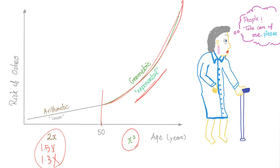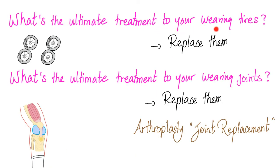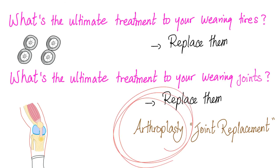Every illustration here has a purpose. What's the ultimate treatment for worn-out tires? Replace them. What's the ultimate treatment for a worn-out joint? Replace it — called joint replacement, or what sophisticated surgeons call arthroplasty. 'Plasty' means formation or creation, and 'arthro' means joint.